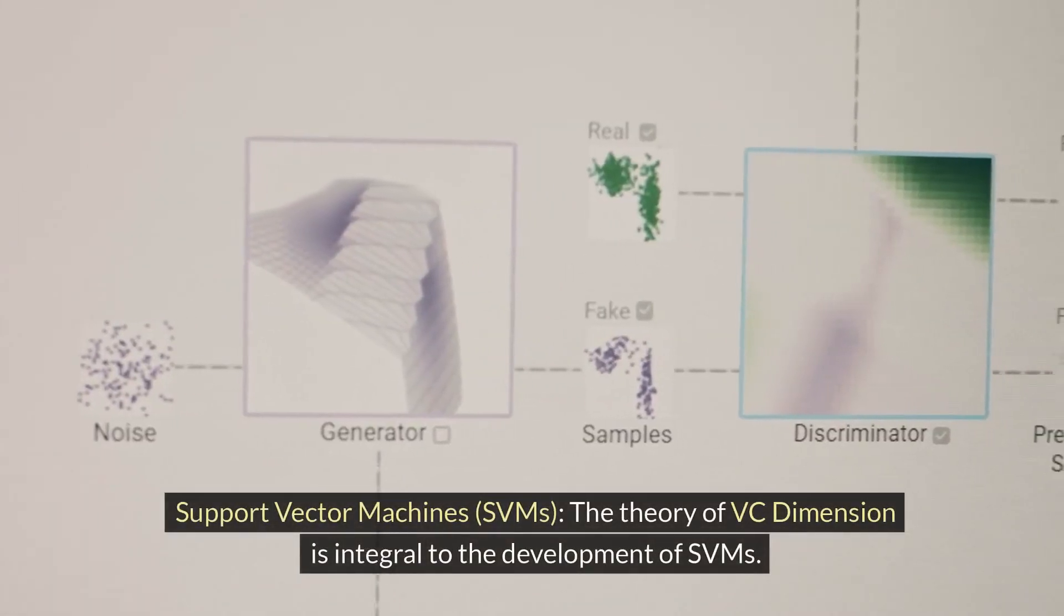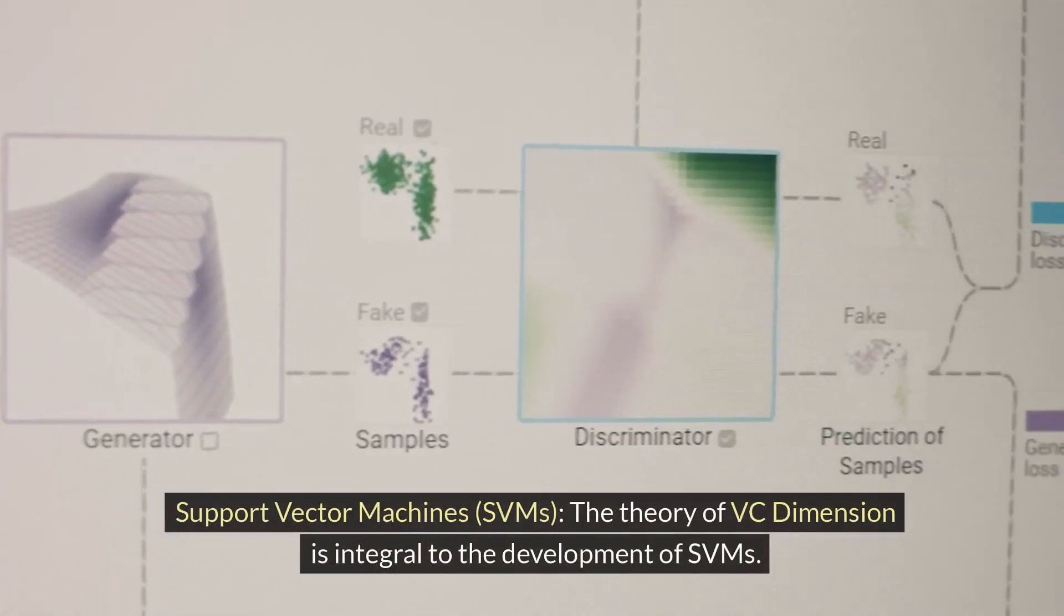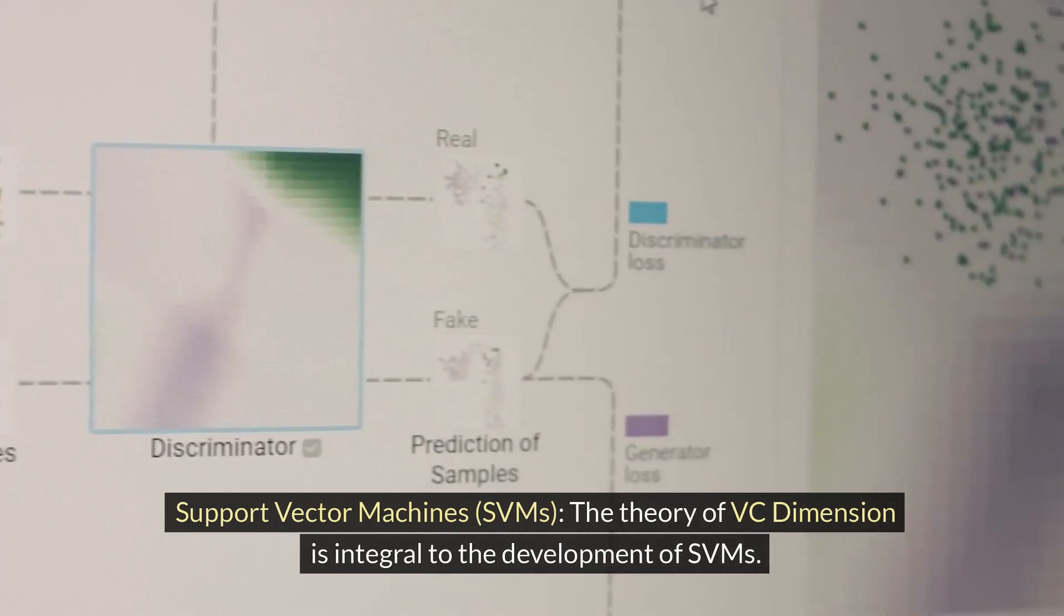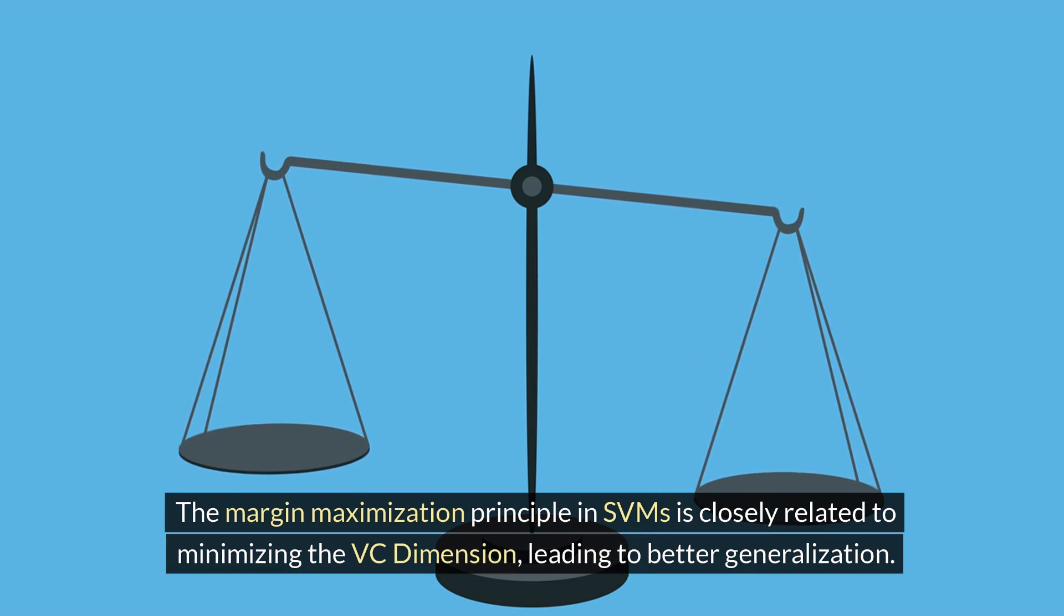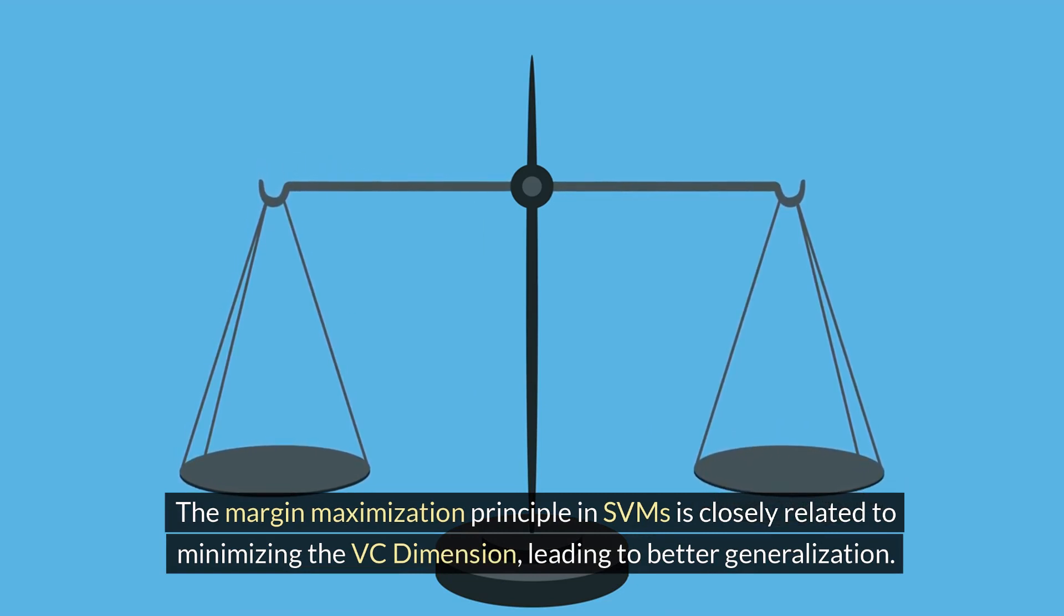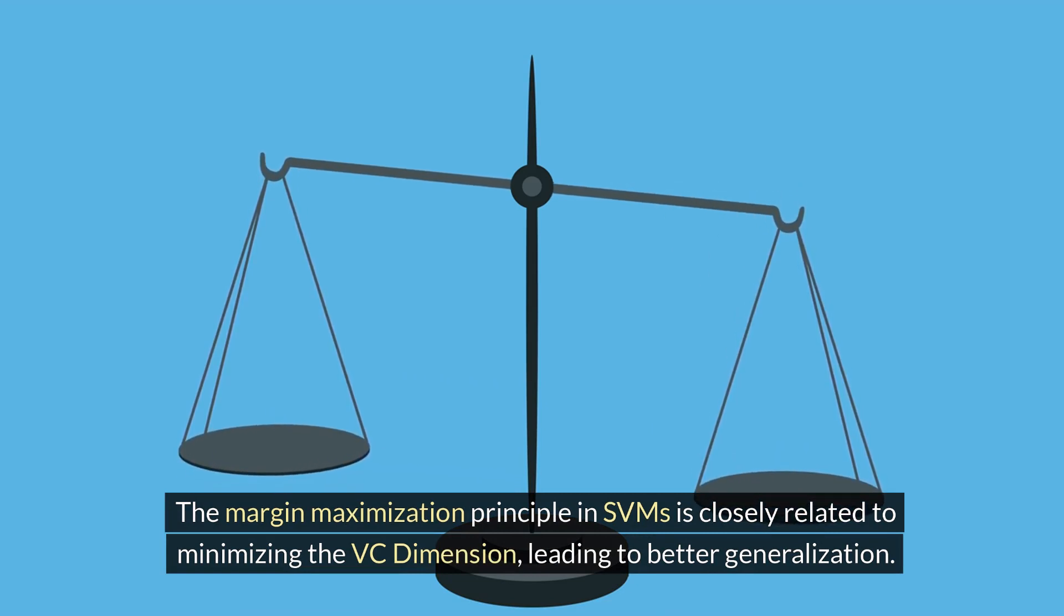Support Vector Machines (SVMs). The theory of VC dimension is integral to the development of SVMs. The margin maximization principle in SVMs is closely related to minimizing the VC dimension, leading to better generalization.